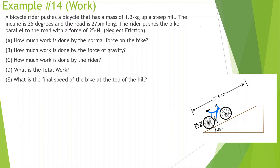Let's first start out with the free body diagram. We should see there's going to be a force of gravity going straight down, and force of gravity is going to be 1.3 times 10, which is 13 N. There's going to be a normal force going perpendicular up, and then we're going to say there's a force applied going directly up the hill, which is 25 N.